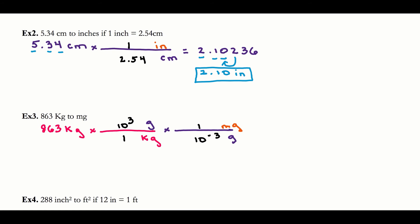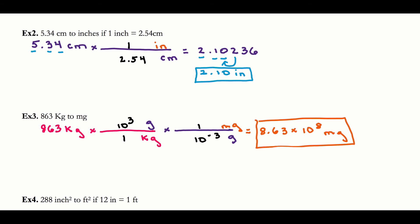I take 863, multiply by 10 to the third (in the numerator), then divide by 10 to the negative third, and I get 8.63 times 10 to the 8. My units are milligrams. Checking sig figs: 10 to the third and 10 to the negative third are relationships — ignore them. 863 has three sig figs; 8.63 also has three sig figs. My final units are milligrams, and I'm good to go.